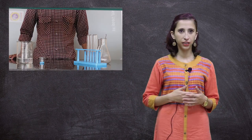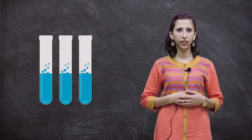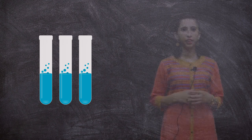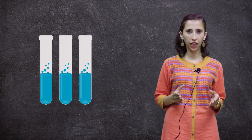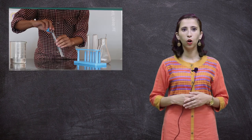In this next activity we will take three test tubes each containing an equivalent amount of water. In each of these test tubes we will add one of these three ingredients: copper sulphate, wheat flour, and ink.